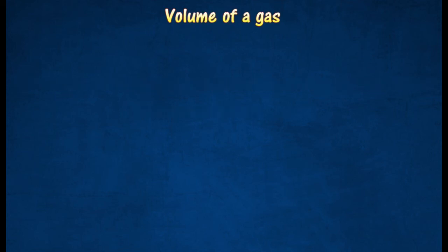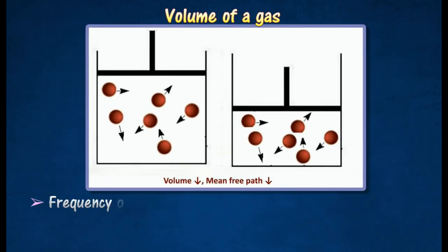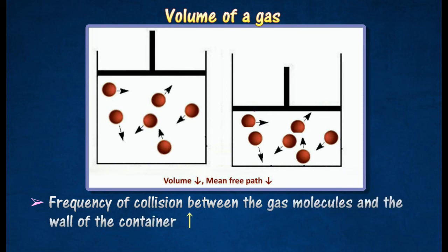When the volume of a fixed mass of gas decreases, the mean free path of its molecules will also decrease. The decrease in the mean free path causes the frequency of collision between the gas molecules and the wall of the container to increase. Thus, the gas pressure increases.